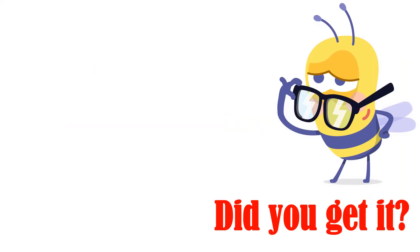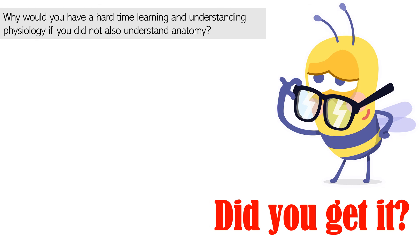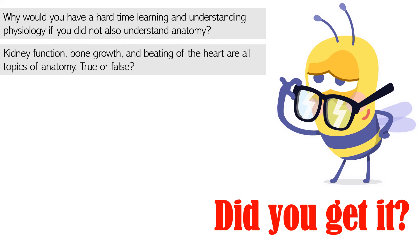Now that we have studied different levels of structural organization, looked at organ systems, and know the difference between anatomy and physiology, let's test our knowledge. Question one: Why would you have a hard time learning physiology if you did not understand anatomy? The answer is that anatomy and physiology are related — a given function can occur only if the corresponding structure allows it. Question two: Kidney function, bone growth, and beating of the heart are all topics of anatomy. True or false? False — they are all topics of physiology.